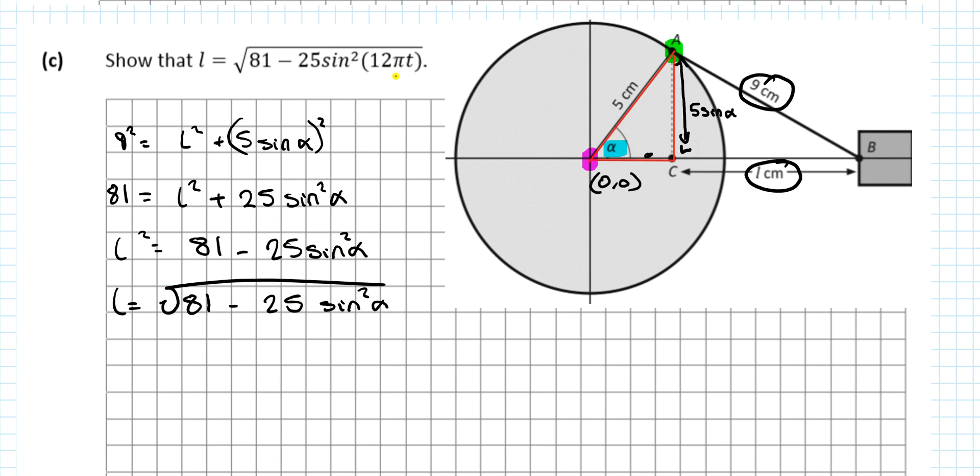Looking at the angle, the 12πt - remember the angle, this is the length of L at any time. So the angle at any time is 12πt. So L equals the square root 81 minus 25 sine squared 12πt. That's it.